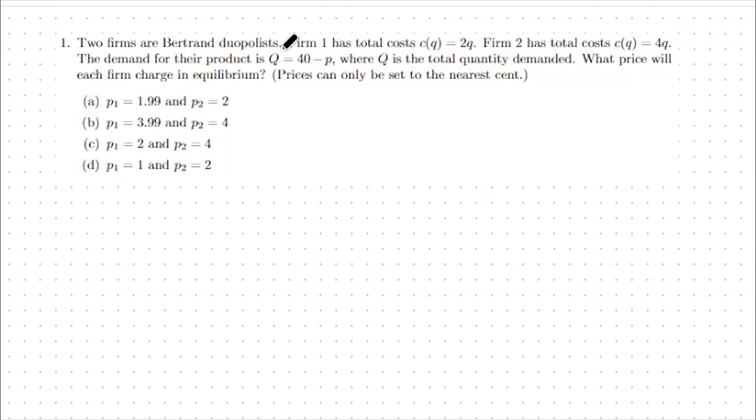In this case we're given two firms and their respective cost functions 2q and 4q, as well as a demand curve of 40 minus p.